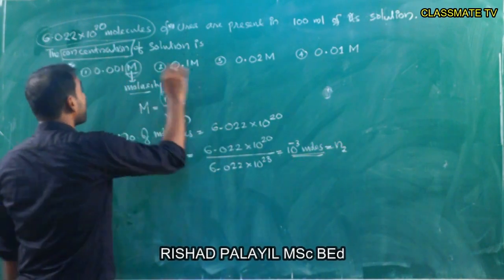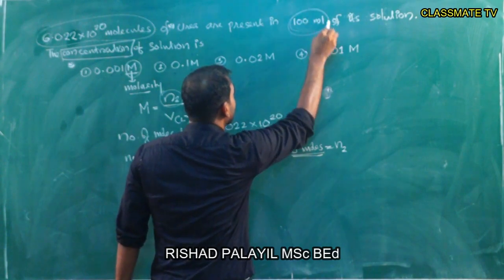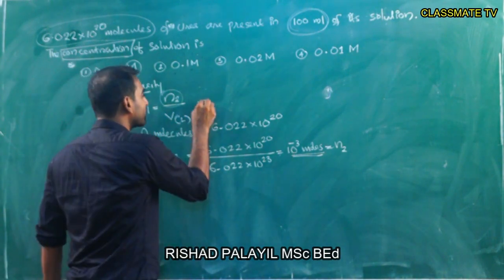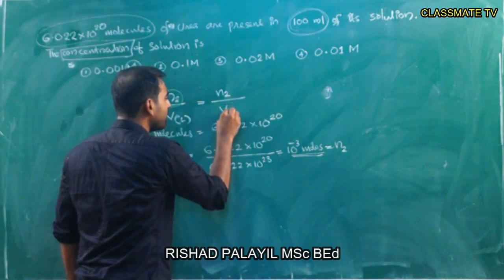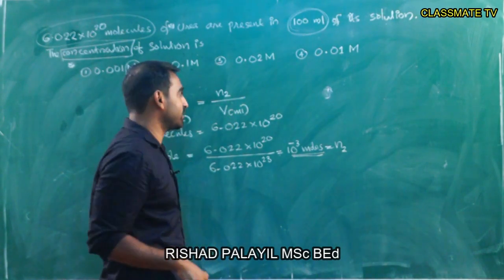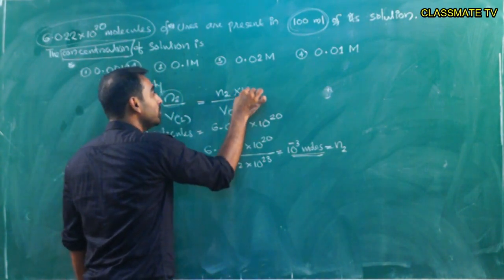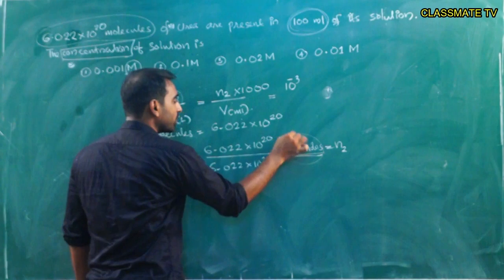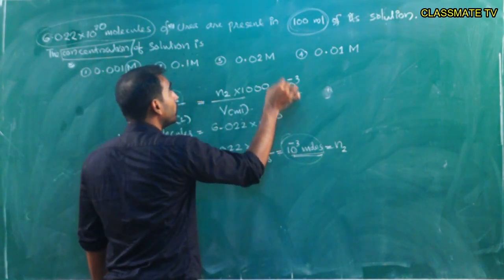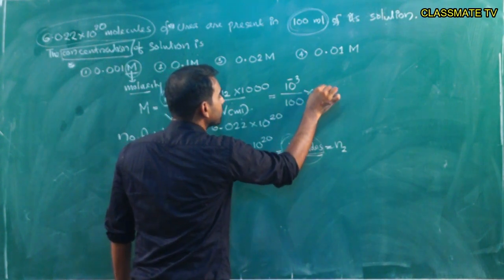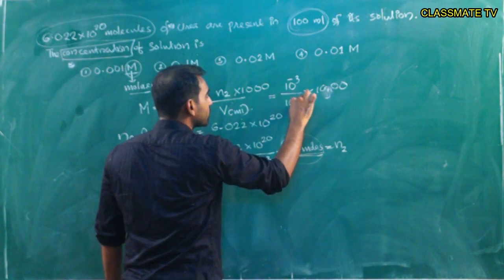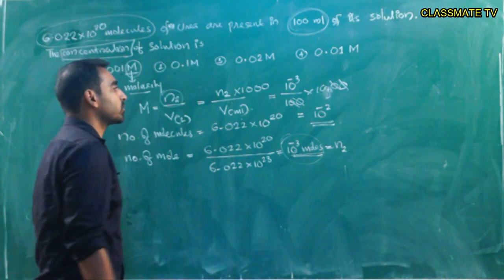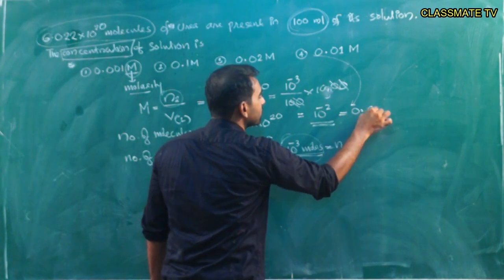Volume is 100 ml solution. To convert ml to liters, divide by 1000. So molarity = n / V(L) = 10⁻³ / (100/1000) = 10⁻³ × 1000 / 100 = 10⁻² molar.